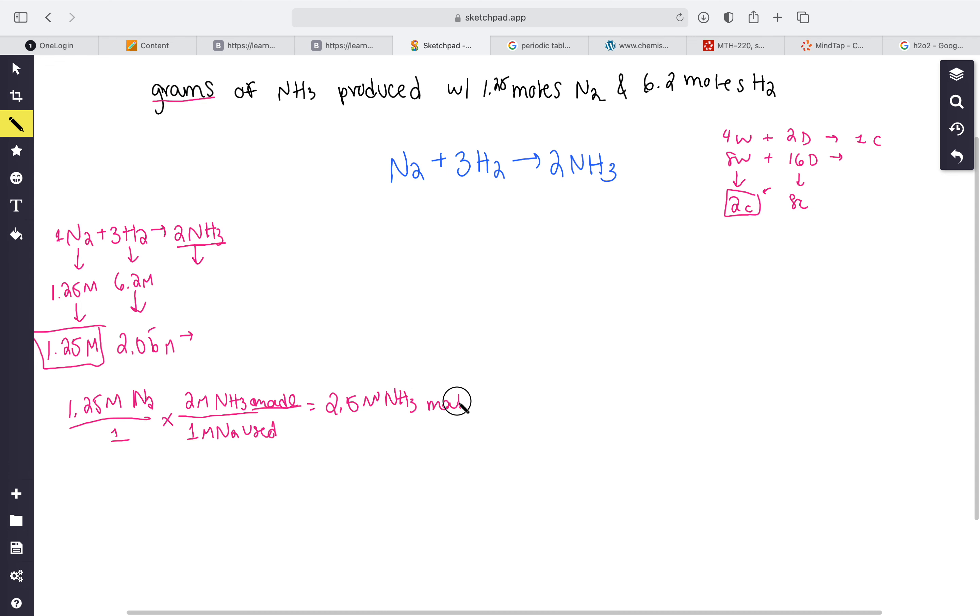We're canceling these out and we're getting this. That means 2.5 moles of NH3 can be made.